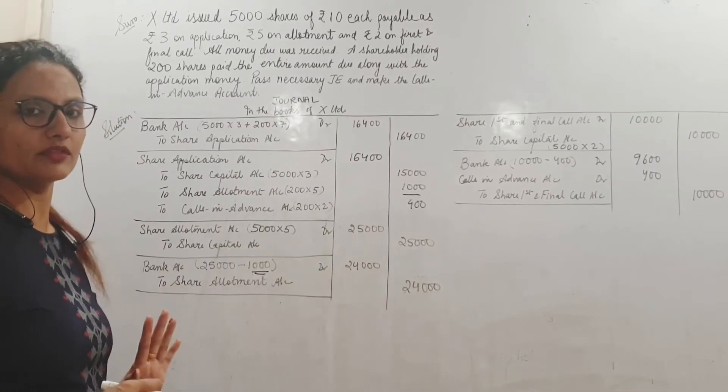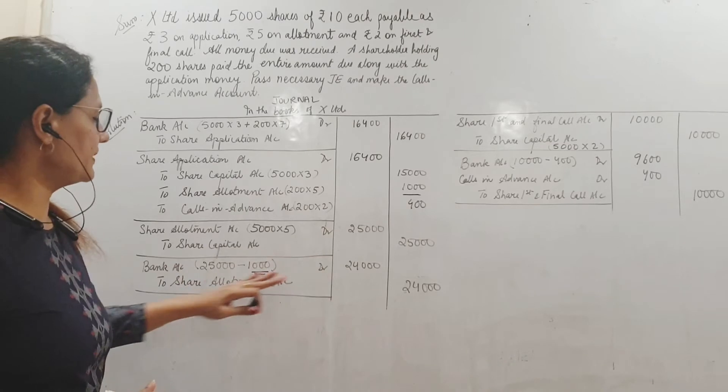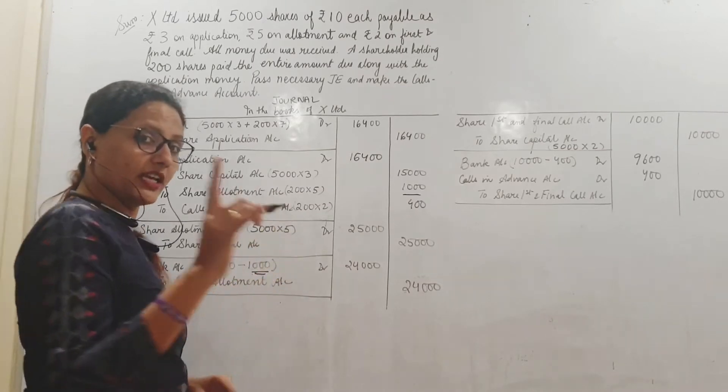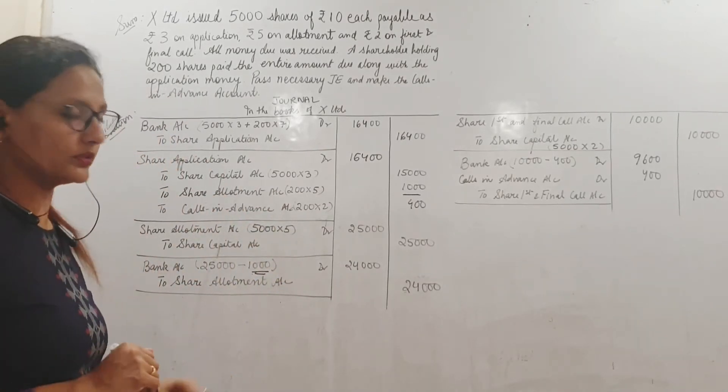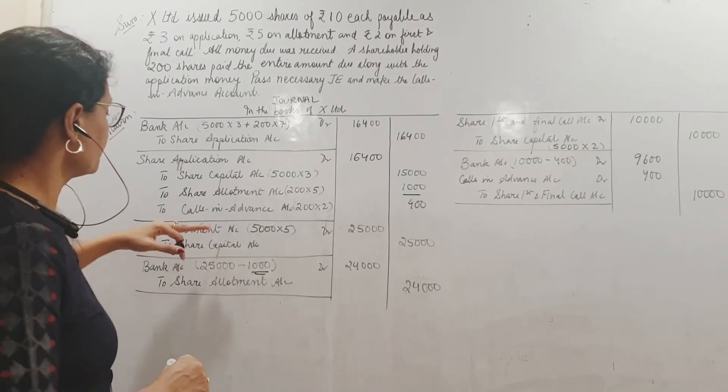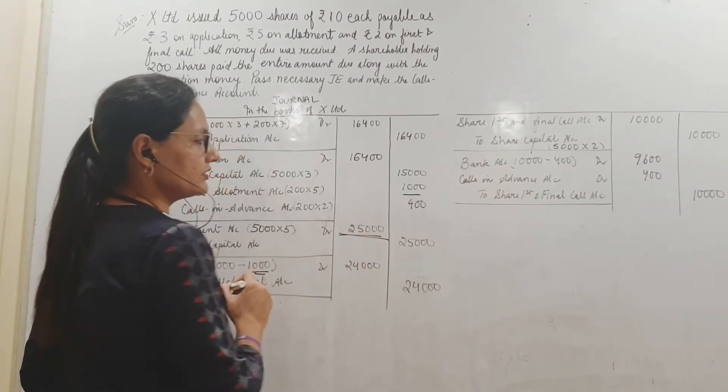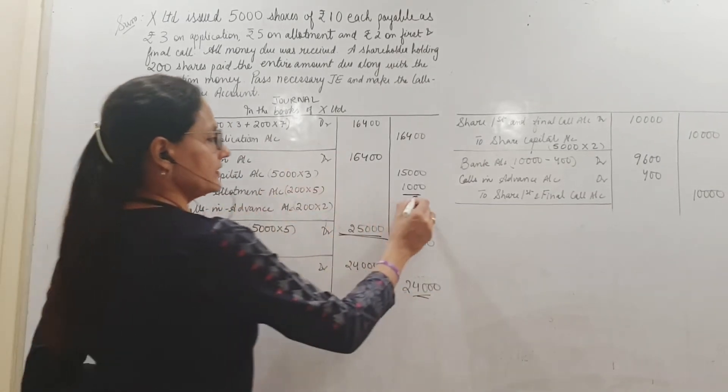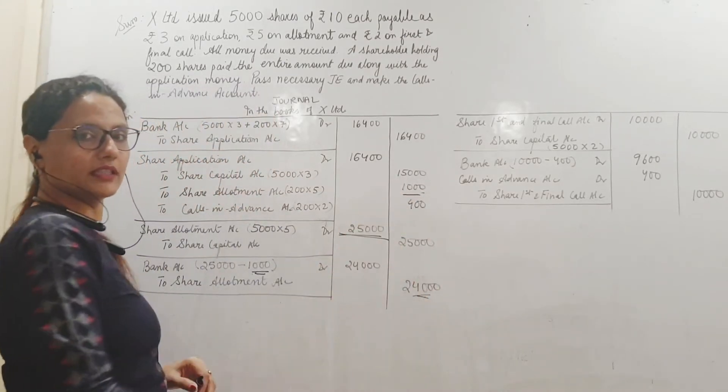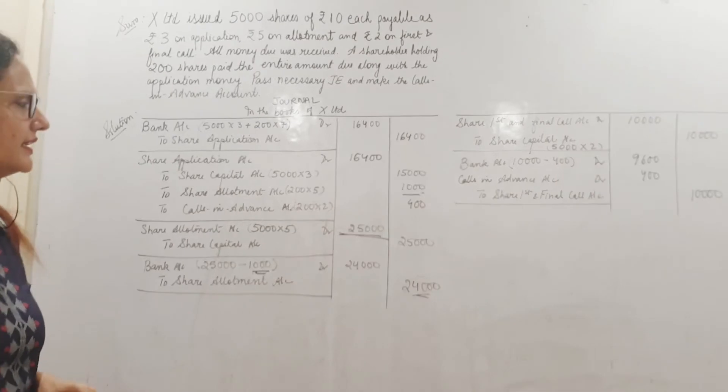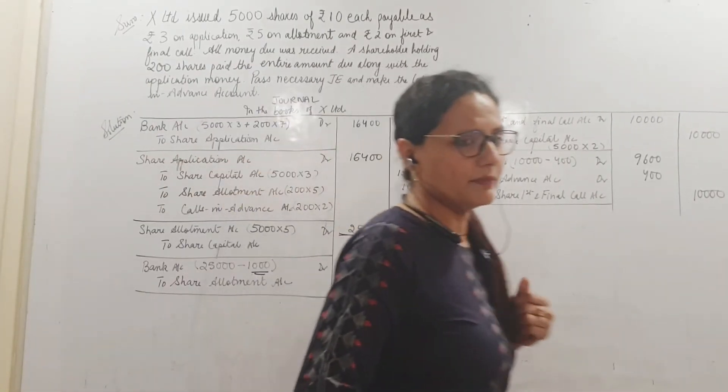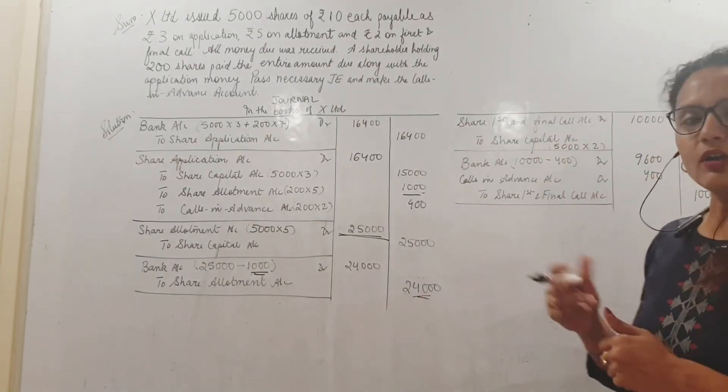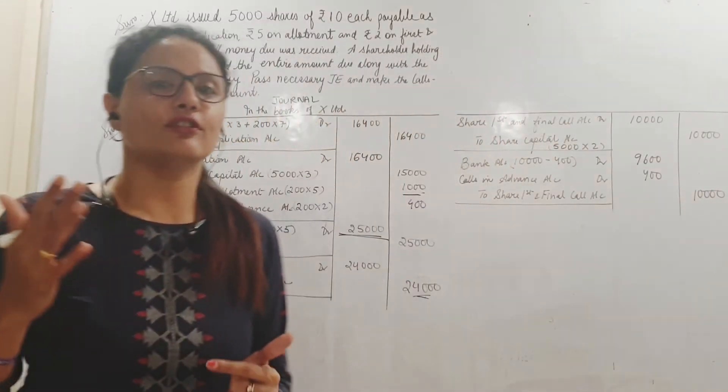So this amount I am adjusting here for allotment. Whatever I have received in advance, I will not receive again. So I have subtracted that from the allotment money. Now how much will I receive? 24,000. So bank debit to share allotment 24,000, not 25,000. Has my share allotment account closed? To close, transfer entry and received by bank entry. Share allotment I have credited how much? 25,000. Here I have credited share allotment with 24,000 and I have already credited with 1000 here. So debit is equal to the credit, 25,000.